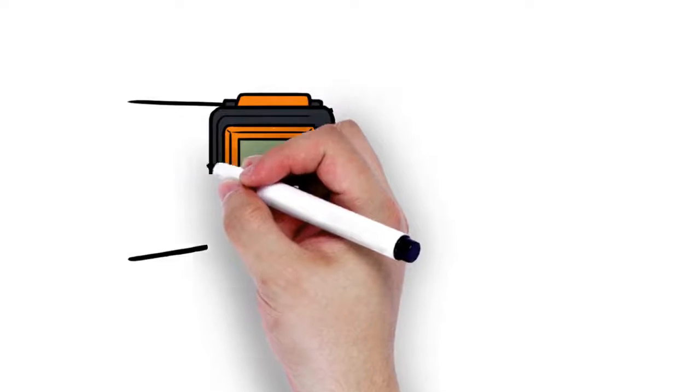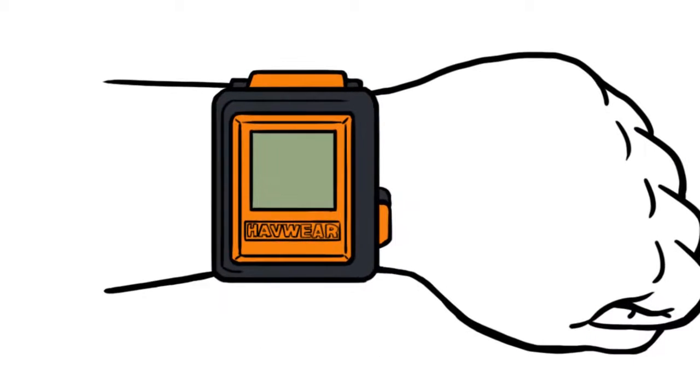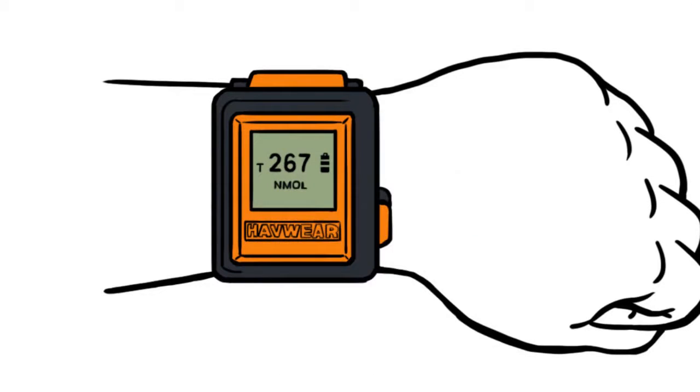The Havware is wrist mounted to provide a truly personal monitoring experience. It calculates and displays in real time HAVS risk exposure points to inform the wearer of their exposure to vibration and thresholds reached.